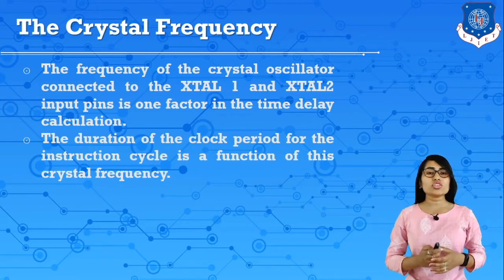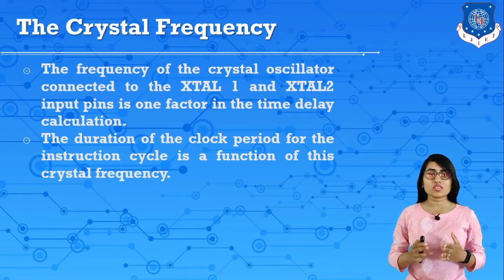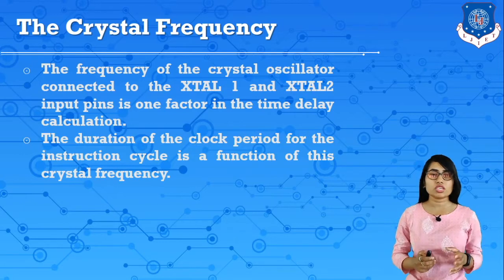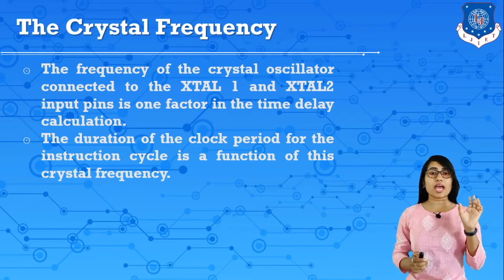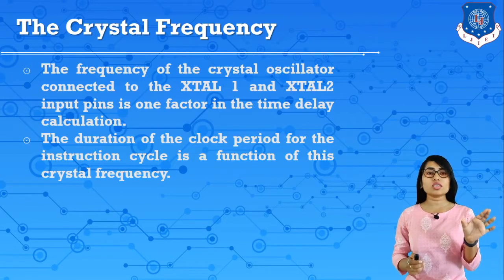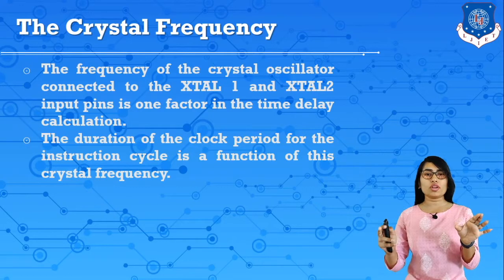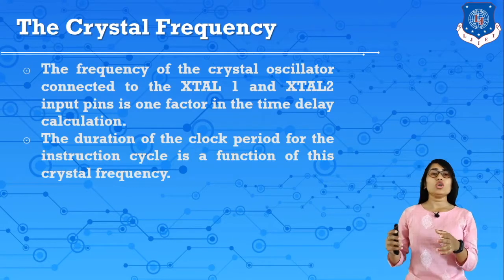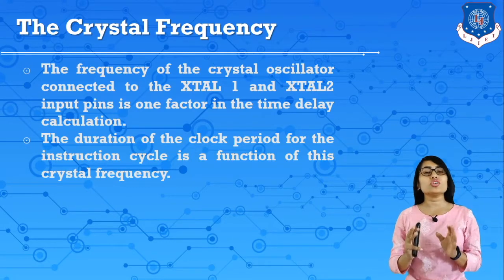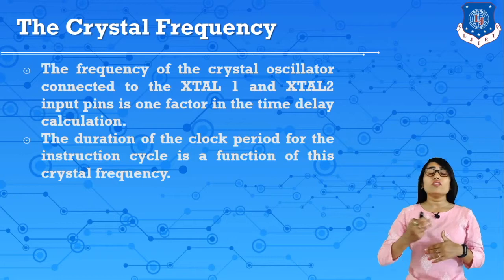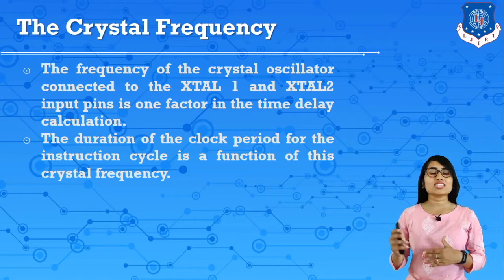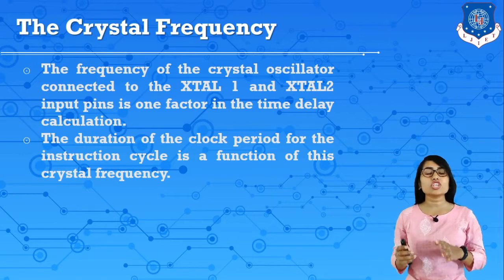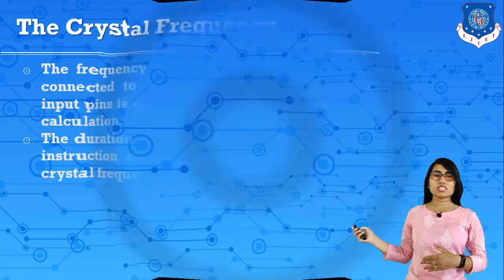The duration of a clock period for the instruction cycle is a function of the crystal frequency. Clock duration time equals 1 divided by f — that means time equals 1 upon frequency.